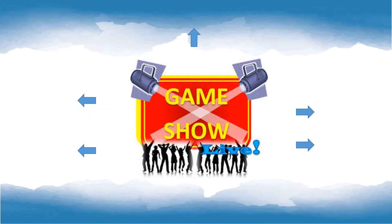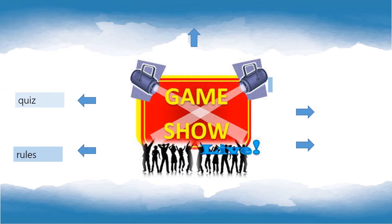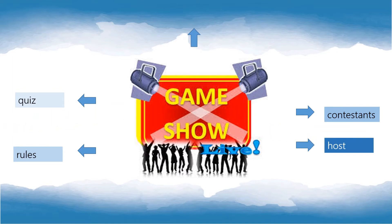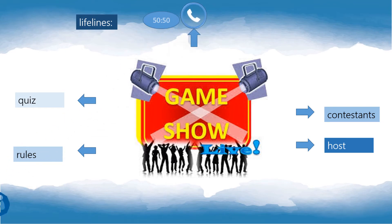Have you ever watched the game show 'Who Wants to Be a Millionaire?' It's a very popular quiz in many countries. Do you know the rules of the game? There are 15 questions that the contestants have to answer in order to reach the 1 million prize. The host asks the questions and there are 4 answers: A, B, C and D. Three of them are wrong answers and one is correct. The contestants may use up one or more of their 3 lifelines: 50-50, phone a friend, or ask the audience.